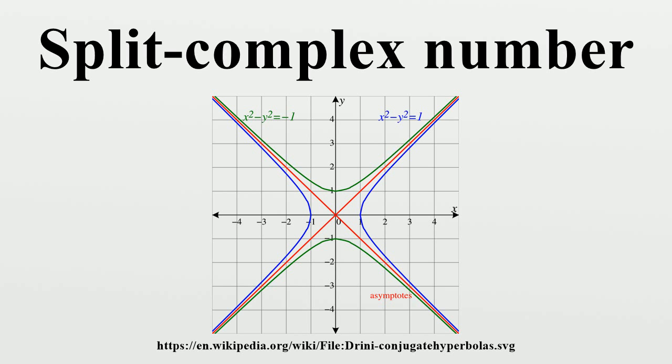He developed two algebraic systems, each of which he called approximate numbers, the second of which forms a real algebra.